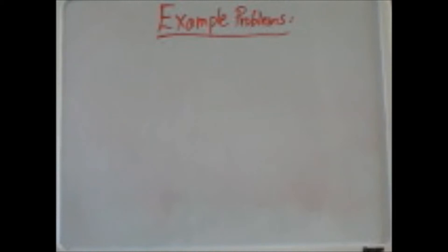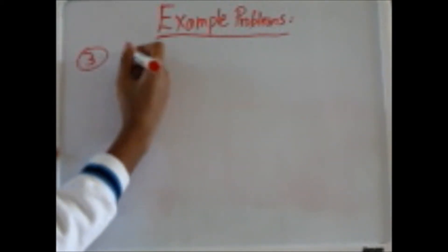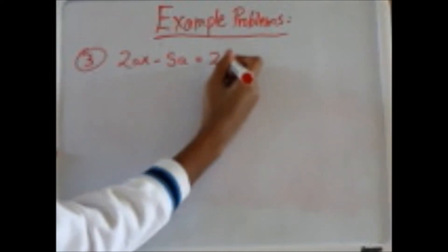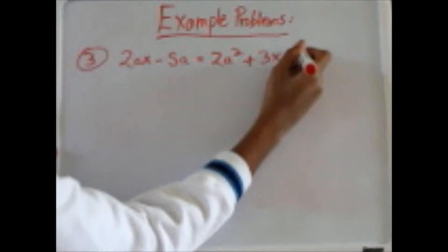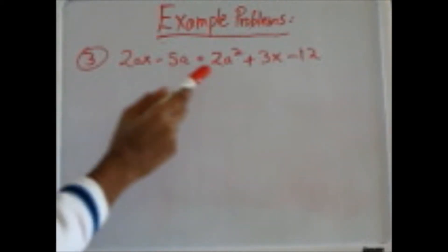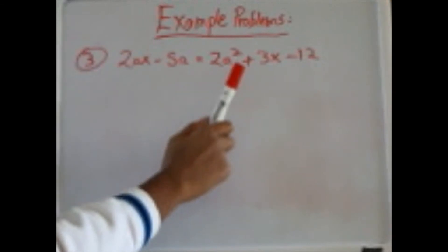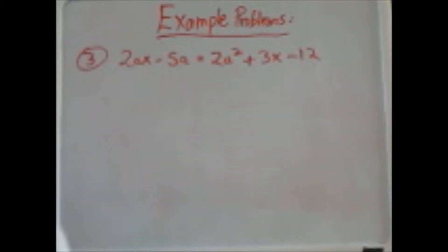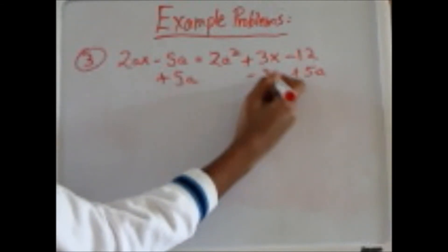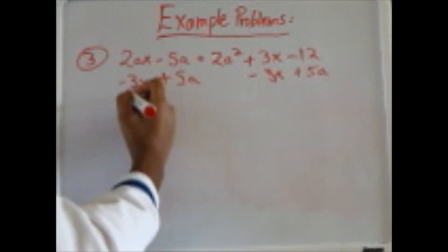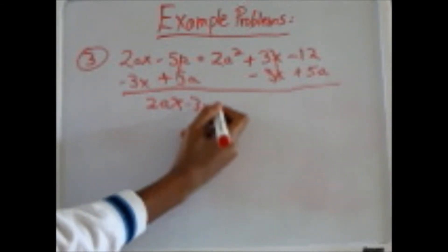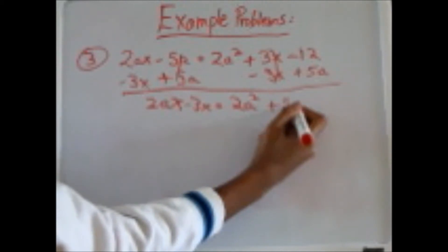Our third example is a problem where we are asked to find the value of x, given that 2ax minus 5a plus 2a squared plus 3x minus 12. In order to factor, we need to have all the variables on the same side. To get the a's on the same side, we add 5a to both sides and subtract 3x, giving us 2a squared minus 3x equals 2a squared plus 5a minus 12.